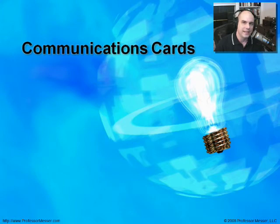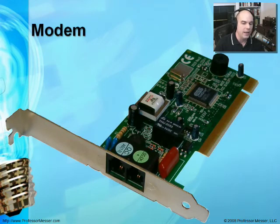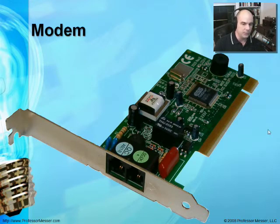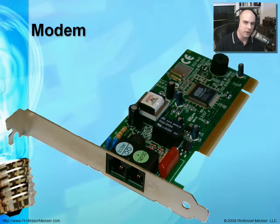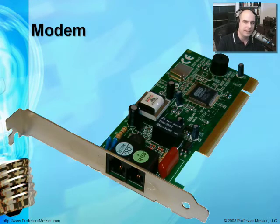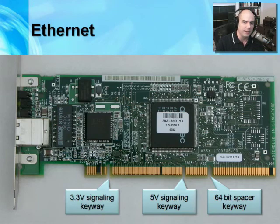When we talk about communications, this is a very critical part of our computer systems because these days almost everything's connected to the internet in some way. One of the first and still common ways to connect is through a modem connection — rather slow, but it does the job. Here's what you'd see with a standard modem. This happens to be a PCI-based modem connection with two connections: one from the wall going into the modem, and a separate connection so you can plug a phone into the other side without needing an extra splitter.